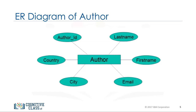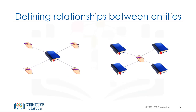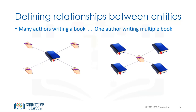Let's see how the entities book and author relate to each other. A book must be written by at least one author. However, a book can be written by two authors, and a book can be written by many authors. As another example, one author can write just one book, or two books, or multiple books.